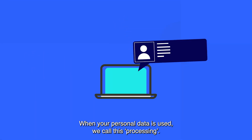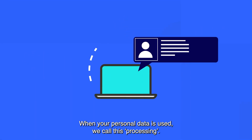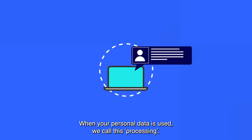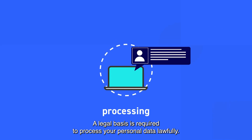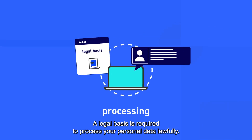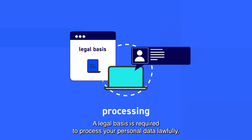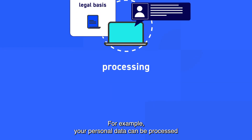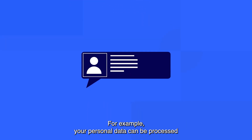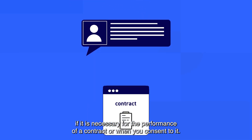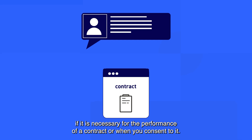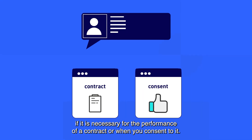When your personal data is used, we call this processing. A legal basis is required to process your personal data lawfully. For example, your personal data can be processed if it is necessary for the performance of a contract, or when you consent to it.